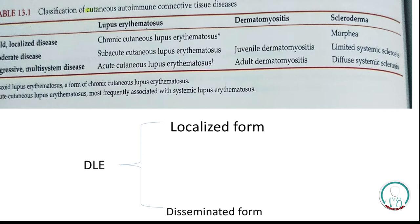Discoid lupus erythematosus has two forms: the localized form and the disseminated form. The localized form involves the head, scalp, and face region, while the disseminated form also has lesions appearing in the trunk and leg regions in addition to the head, scalp, and face.